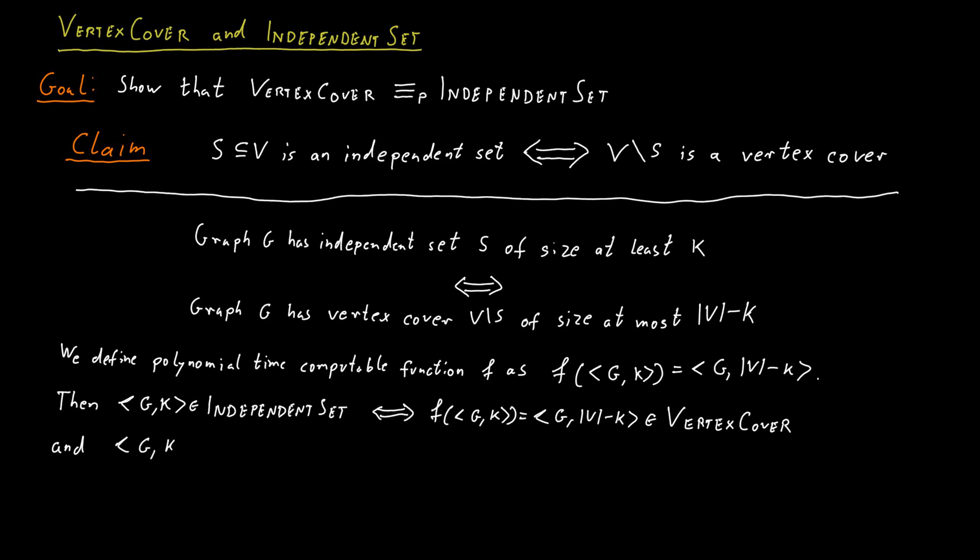Conversely, (G, K) is in VertexCover if and only if F(G, K) equals (G, |V| minus K) is in IndependentSet. This is exactly what we need to prove for these Karp reductions.